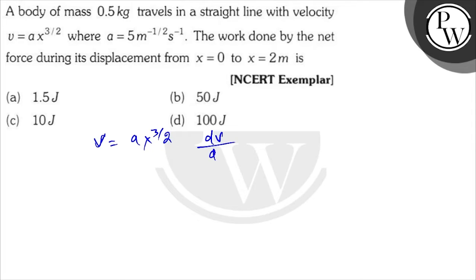We can find dv/dx. dv/dx is (3/2)Ax^(1/2). And if you multiply this with V, V·dv/dx equals Ax^(3/2) times (3/2)Ax^(1/2), which equals (3/2)A²x².